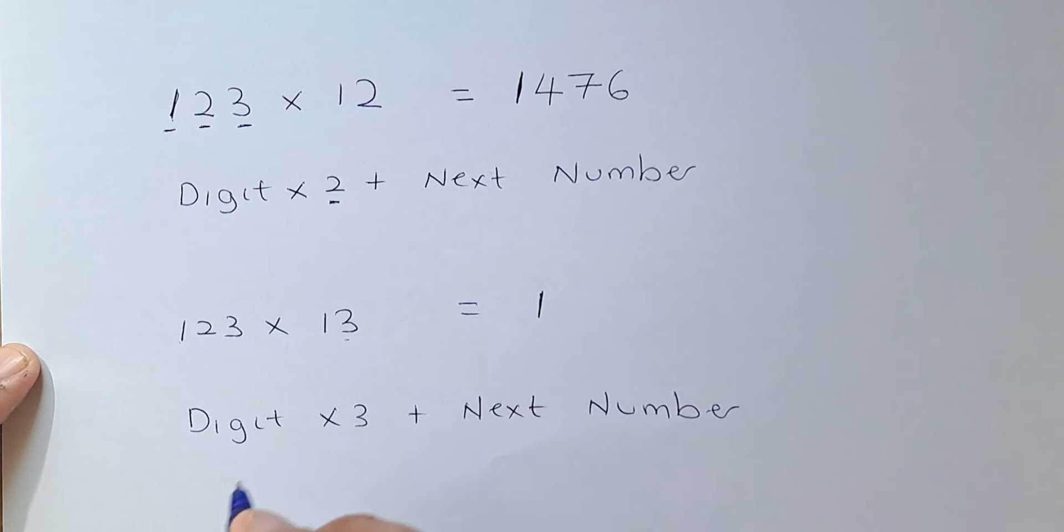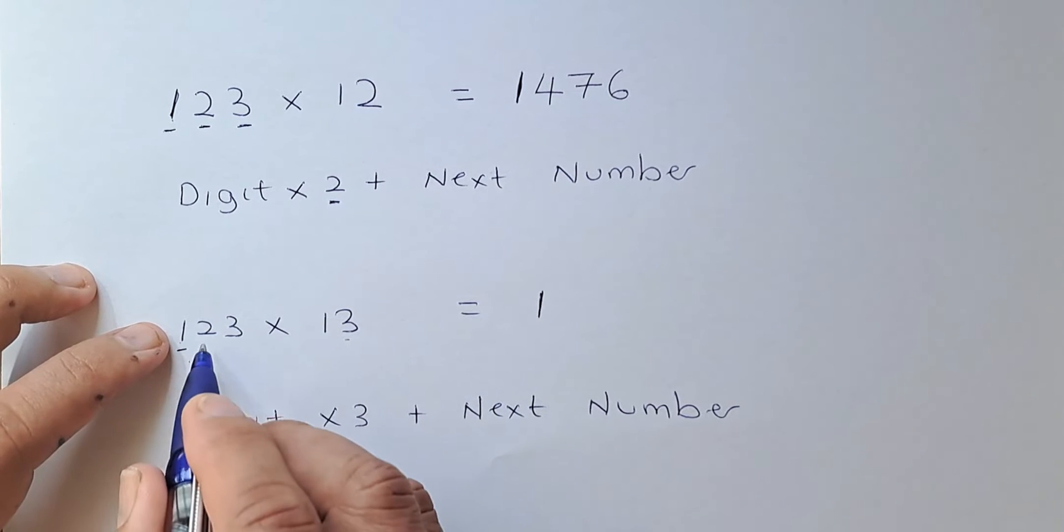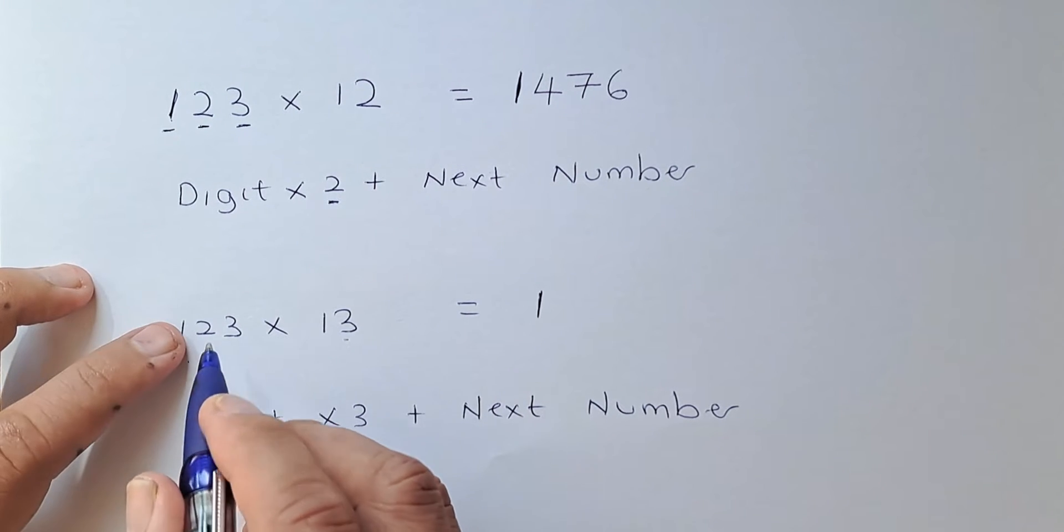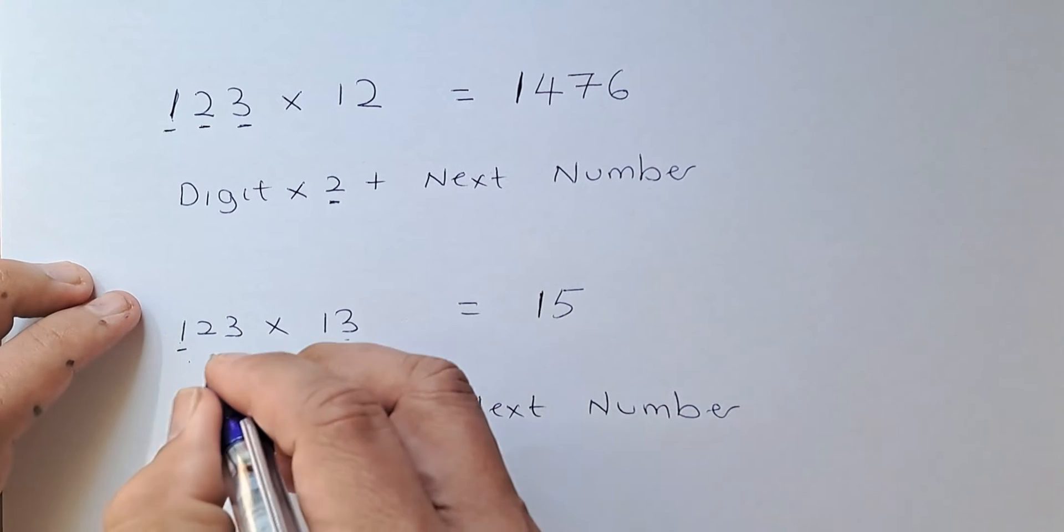1 is 1 and we look at 1 now. 1 times 3 which is 3 plus the next digit is 2. So 3 plus 2 is going to be 5. Next, we look at 2.